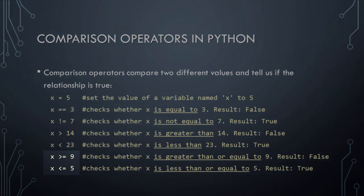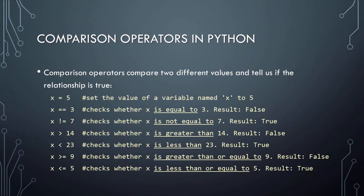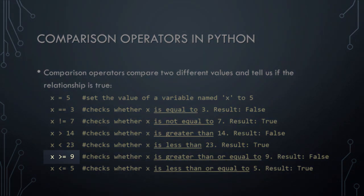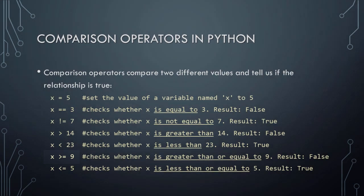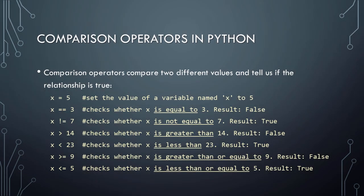Our last two operators represent greater than or equal to and less than or equal to respectively. In the first case, the result is false, because x is not greater than or equal to 9. In the second case, the result is true, because the test is whether x is less than or equal to 5, and x is indeed equal to 5.